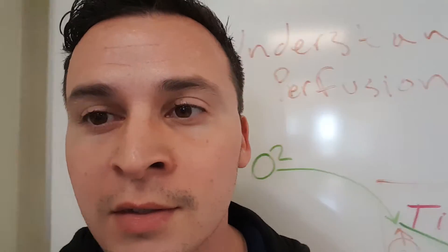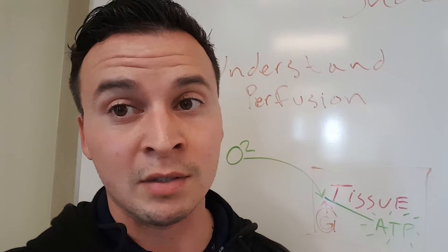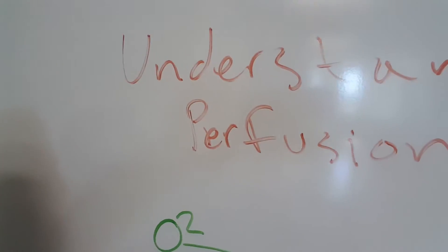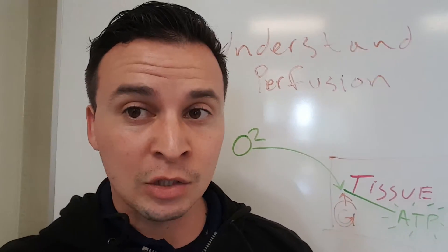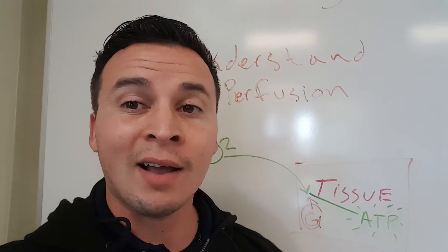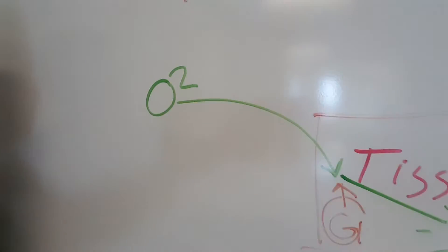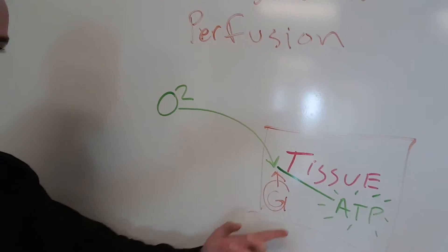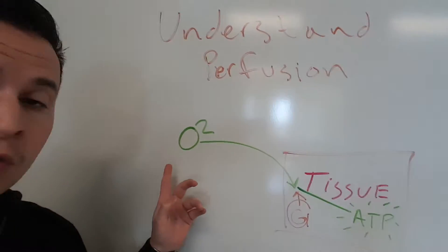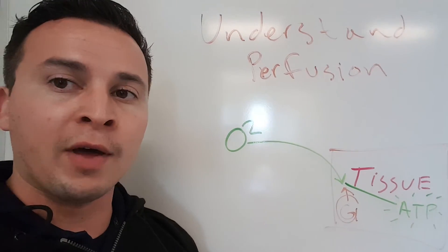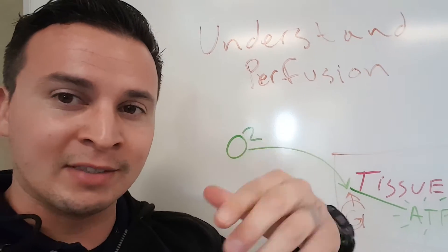Today we're going over shock, but before we do, you have to understand what perfusion is. Perfusion means that oxygen is getting to the tissues of the body — and not only that, but getting there in a timely fashion. Oxygen is carried in the red blood cells, in the hemoglobin precisely.